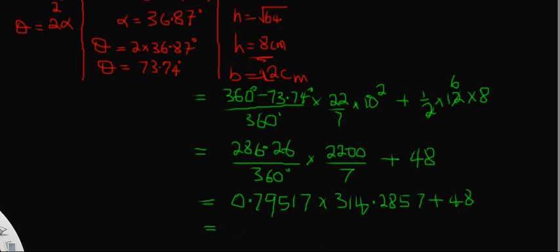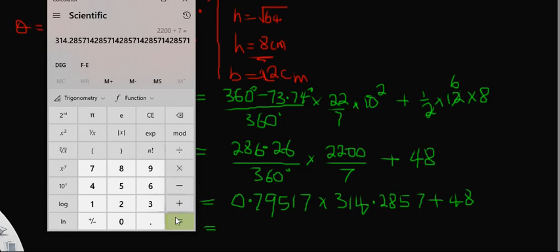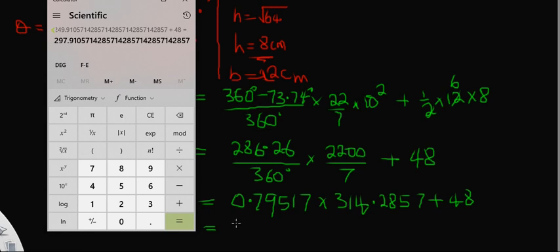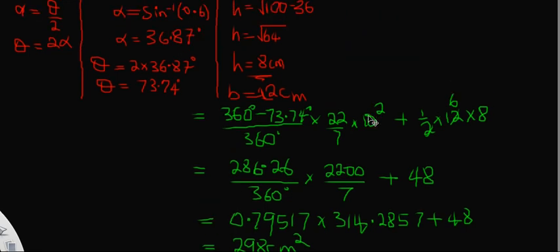So the final answer is approximately 298 cm². This makes a lot of sense. The area of the major segment is approximately 298 square centimetres, which is very easy to follow and I believe it's understandable.